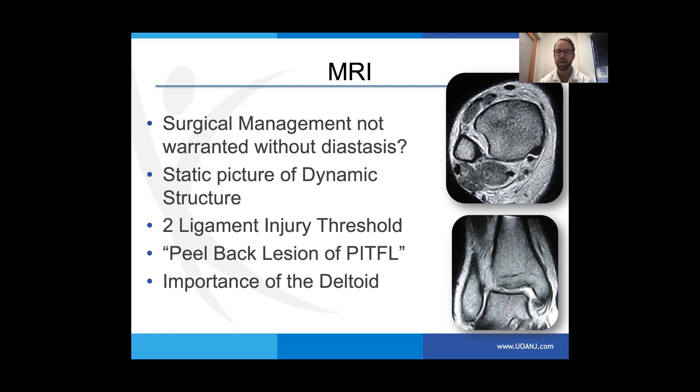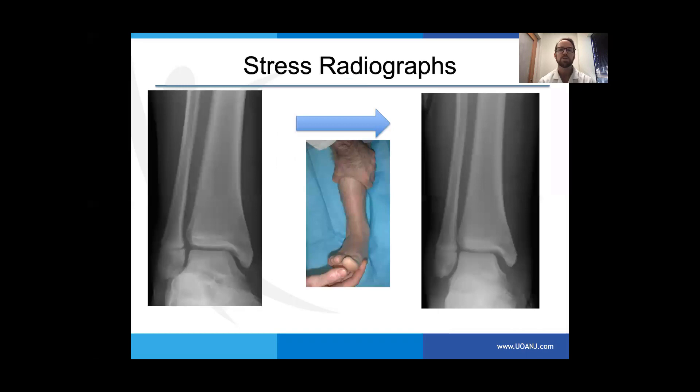The deltoid is the absolute most critical ligament in the ankle joint. Especially in rotary injuries, the deltoid becomes disrupted. When the deltoid becomes disrupted, the talus becomes very unstable. These disruptions are typically seen with the majority of syndesmotic injuries.